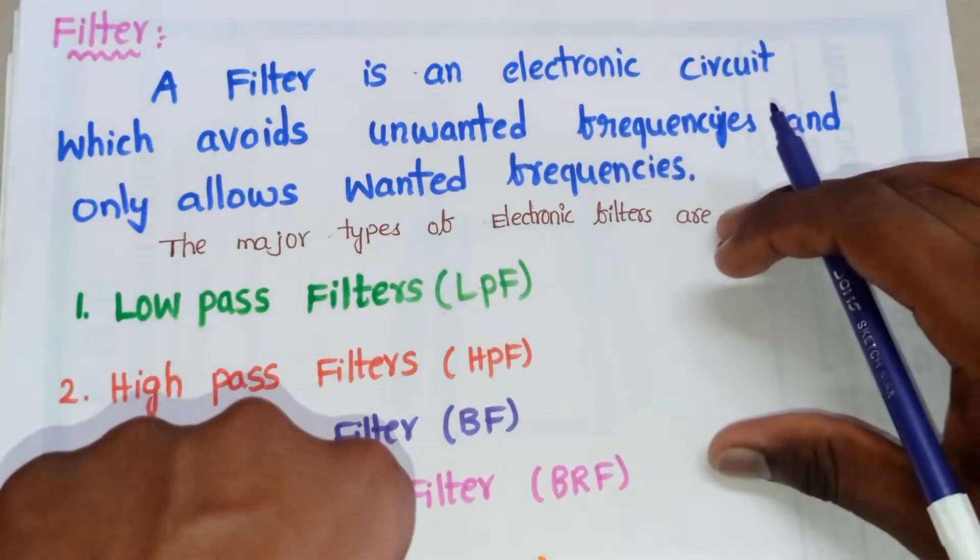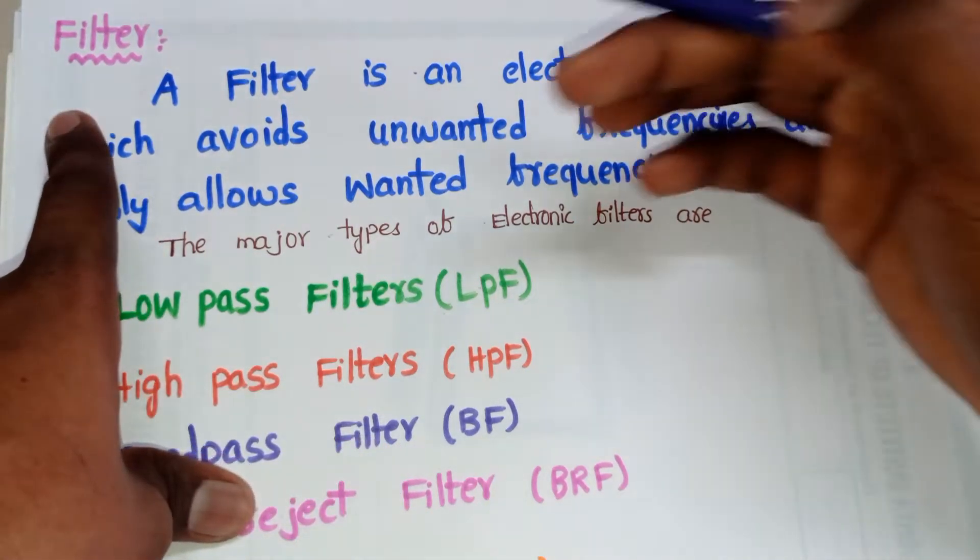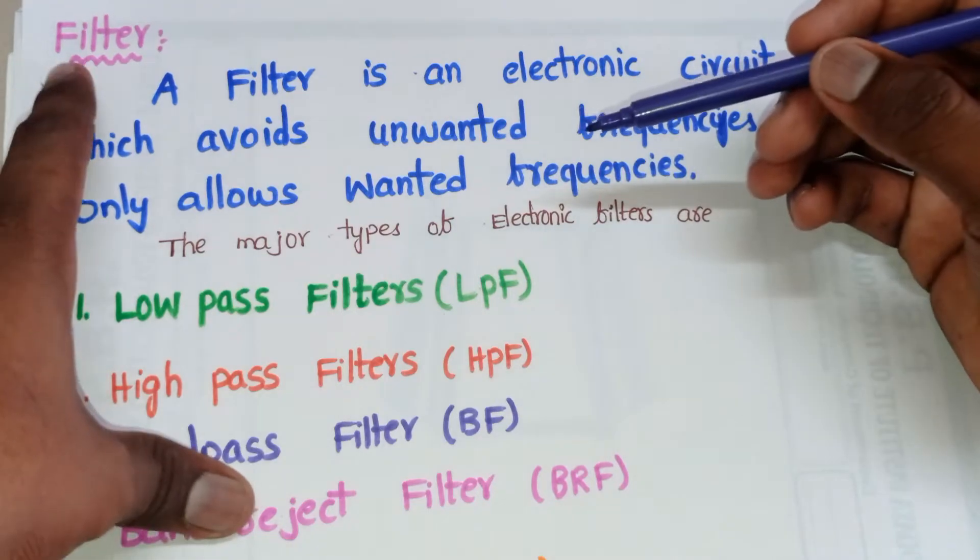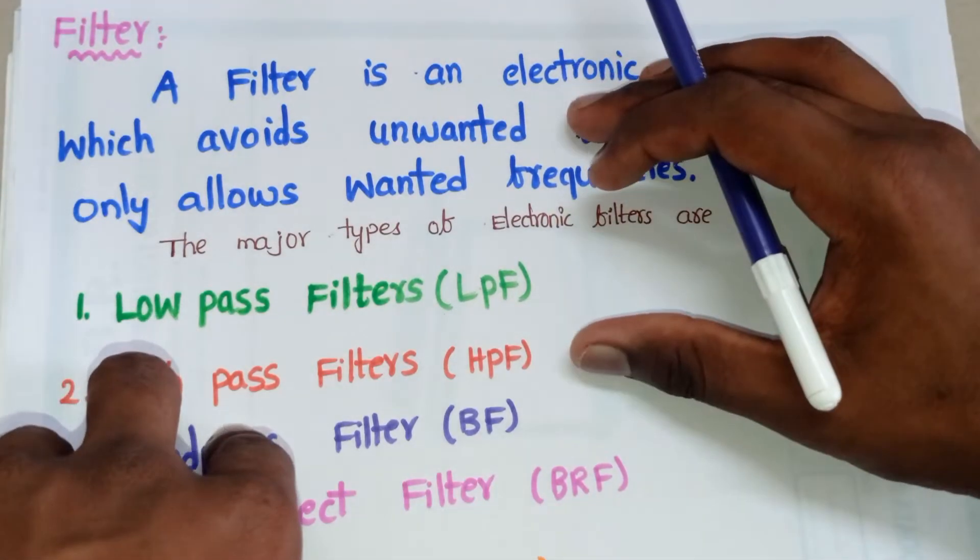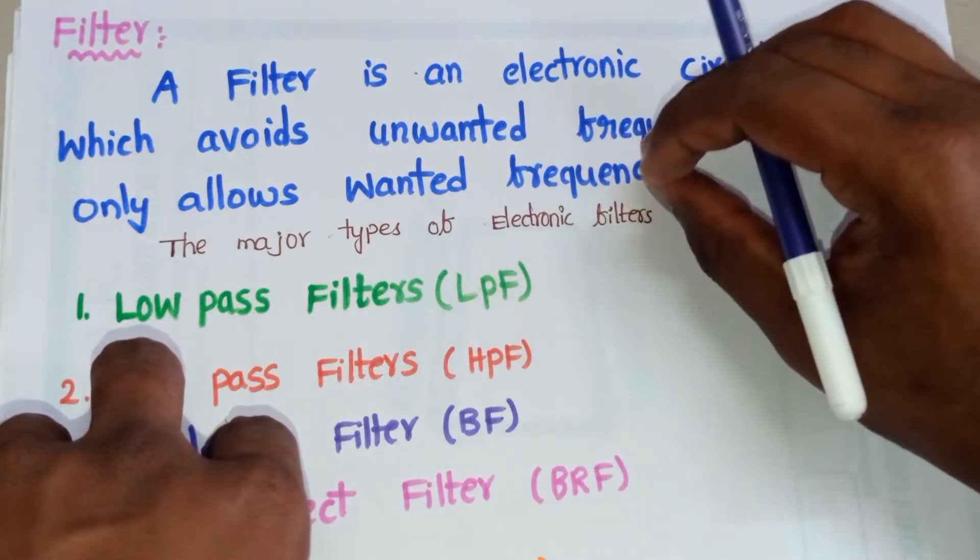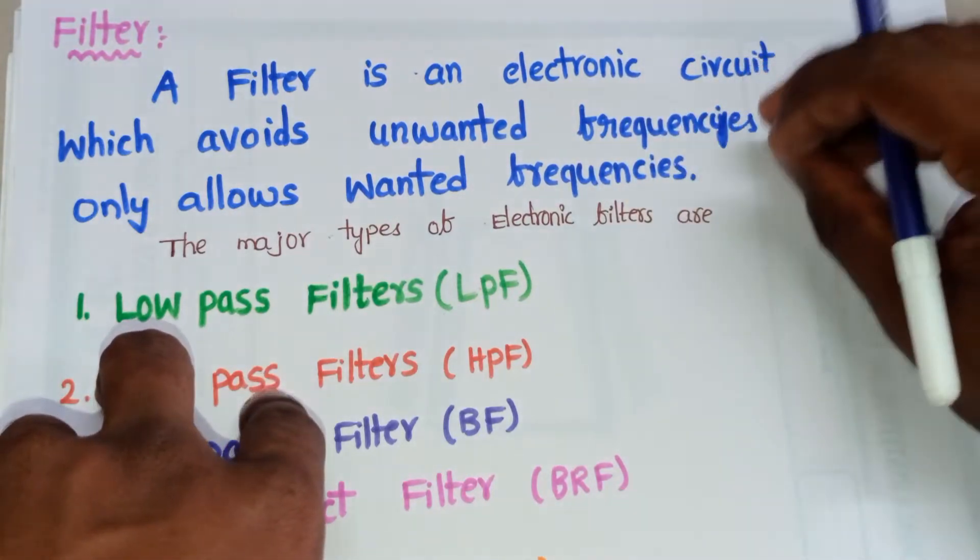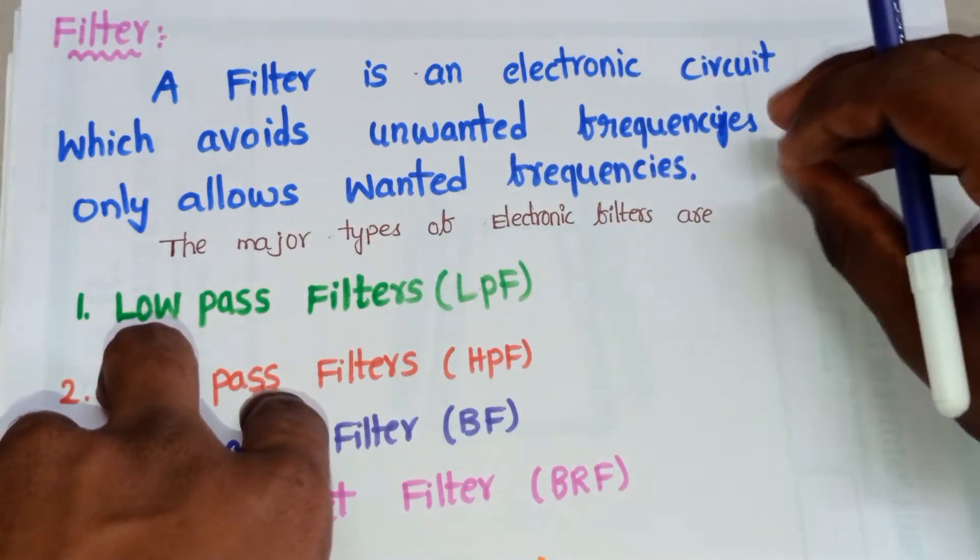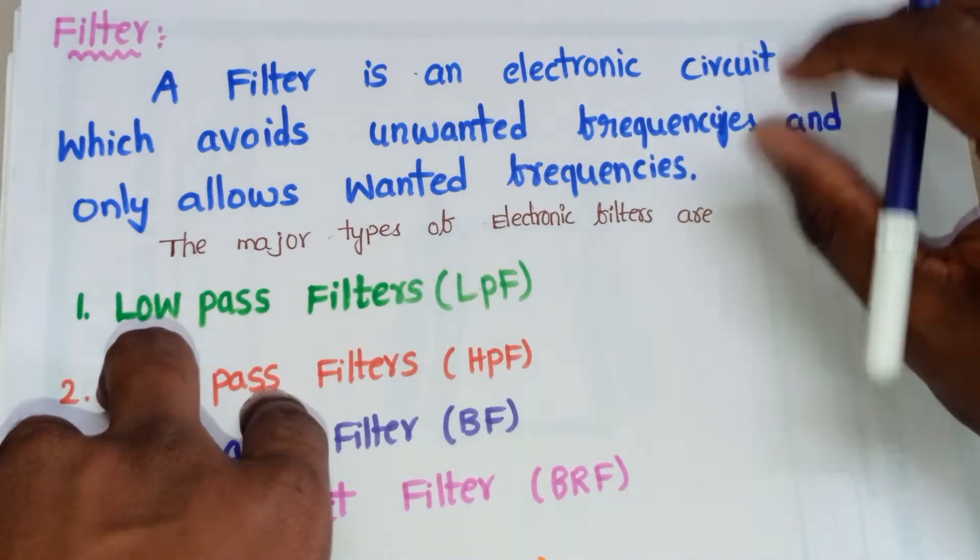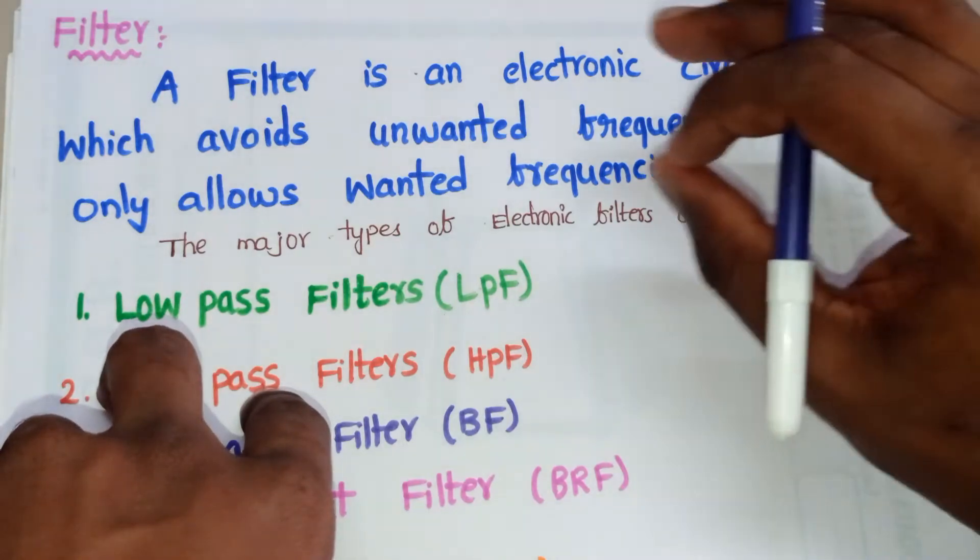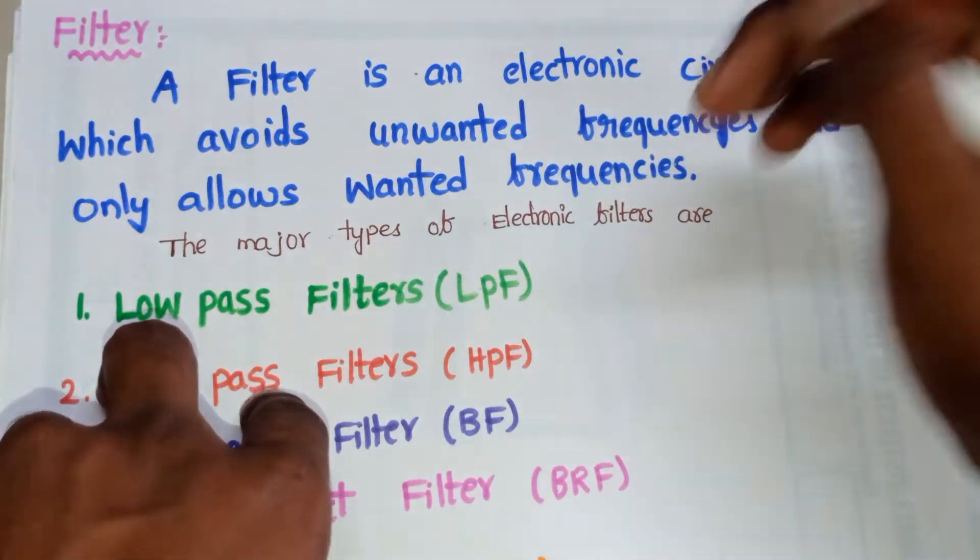Hello friends, in this video we will discuss one of the important concepts in electronics: filters. First, let's see what is a filter. A filter is an electronic circuit which filters out unwanted frequency components. Remember this point: a filter is an electronic circuit which filters out the unwanted frequency components.